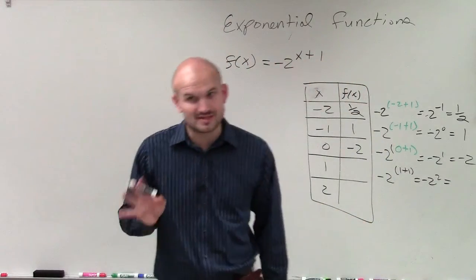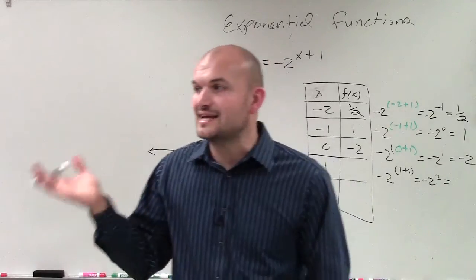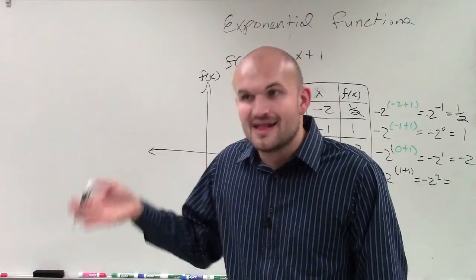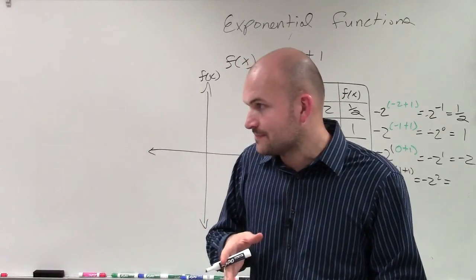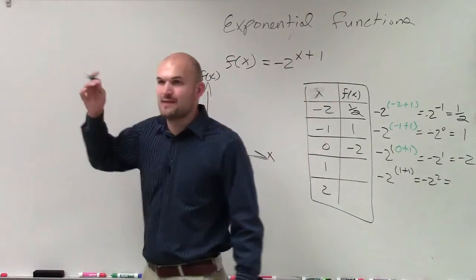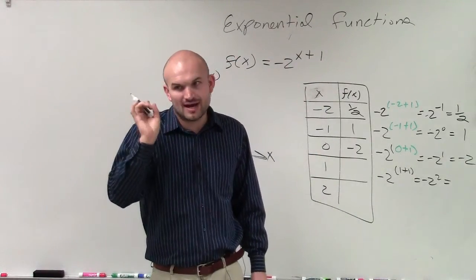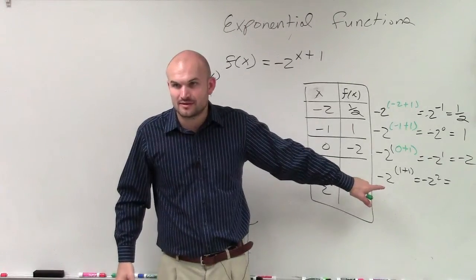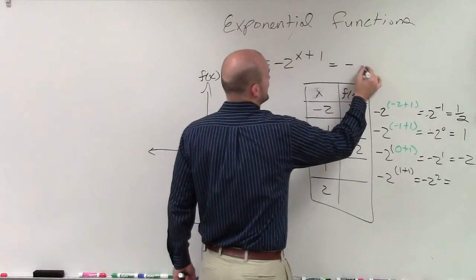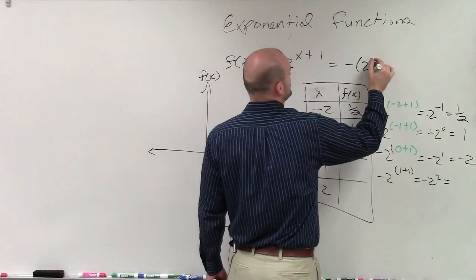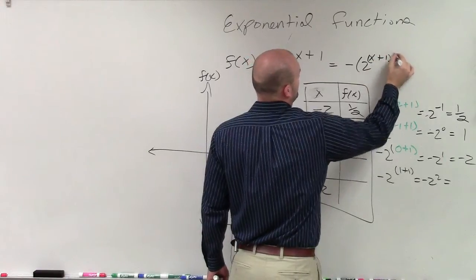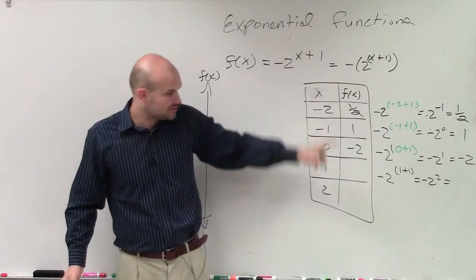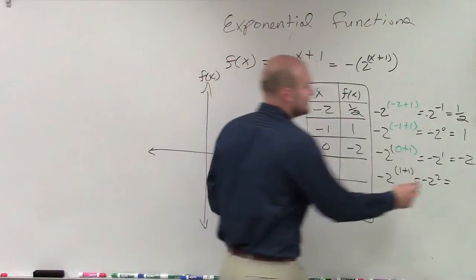Now remember, this gets a little confusing. When it's negative 2 to the second power, you have to apply order of operations. So that is 2 squared then being multiplied by negative. Remember we talked about that? Your base cannot be negative. This is not a negative base. This is really negative times 2 to the x plus 1. 2 is positive. It's just being multiplied by a negative 1. So don't tell me that this answer is 4. It's actually negative 4.